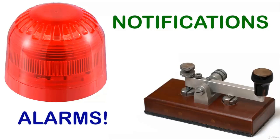Welcome back everybody, this is section 8 of PLC programming from scratch and we are going to be talking about alarms and notifications. What are these, and what's the difference between them? There actually is a difference. Alarms tell the system whenever something's wrong, whenever something's out of whack, whenever a process is out of control, whenever a piece of equipment isn't working correctly. Alarms interrupt processes, they bring things grinding to a halt, they protect people, they protect equipment, they protect product.